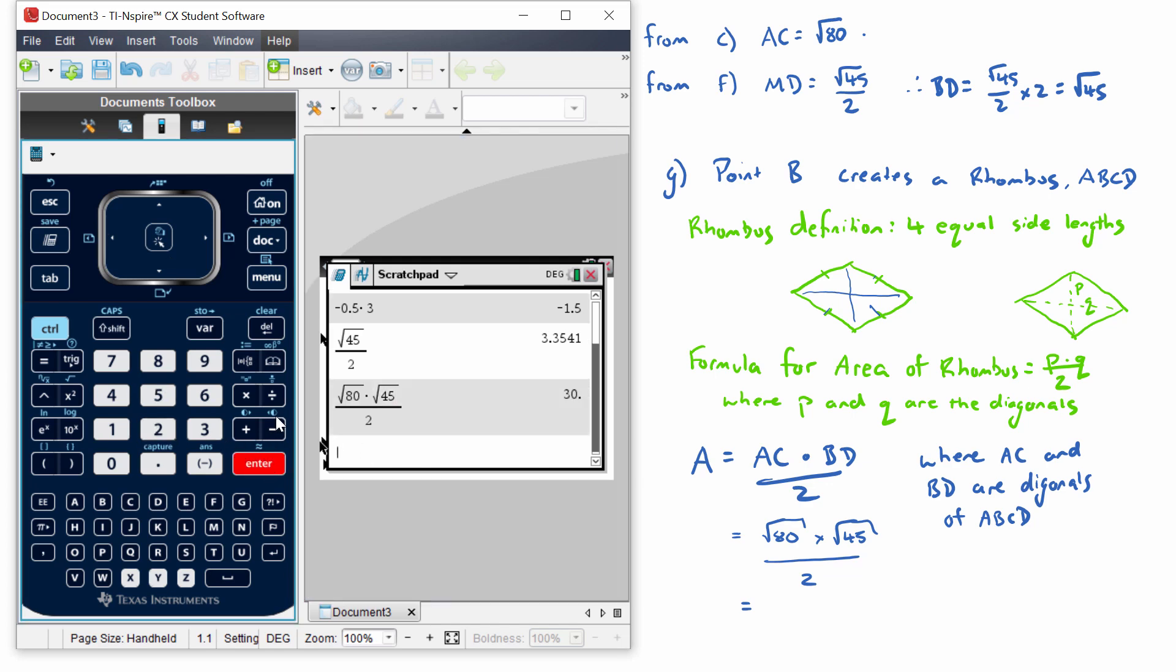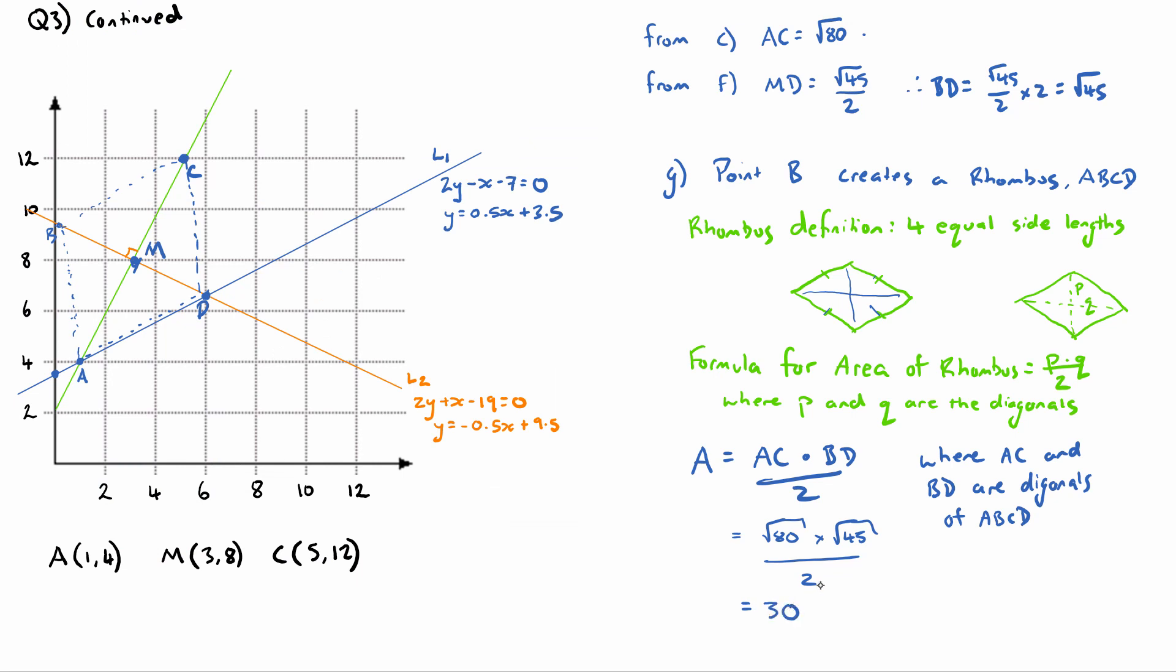Now area would usually be some sort of unit squared - centimeter squared, meter squared, etc. However there are no units on our diagram here since this is on an x-y axis, so our area is just going to be 30 units squared. This is the area of ABCD. That is the answer to part G, question 3.